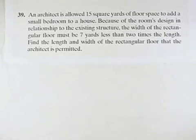An architect has allowed 15 square yards of floor space to add a small bedroom to a house. Because of the room's design in relationship to the existing structure, the width of the rectangular floor must be 7 yards less than 2 times the length. Find the length and width of the rectangular floor that the architect has permitted.